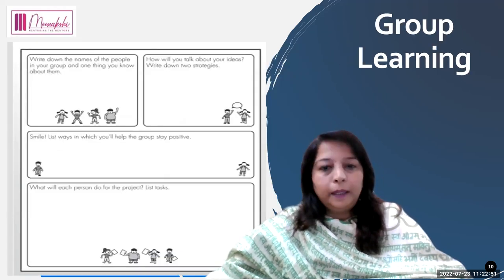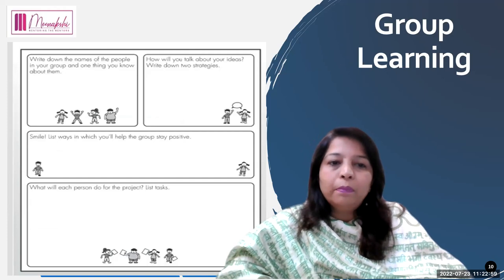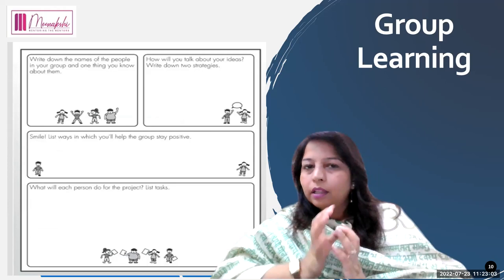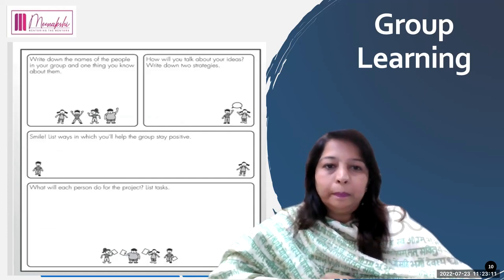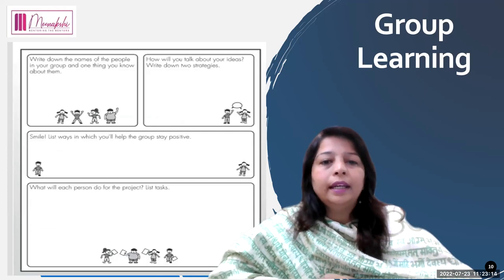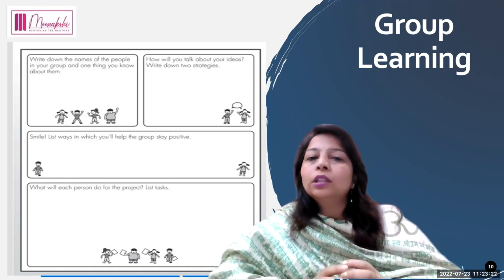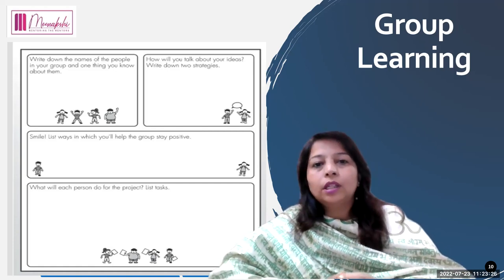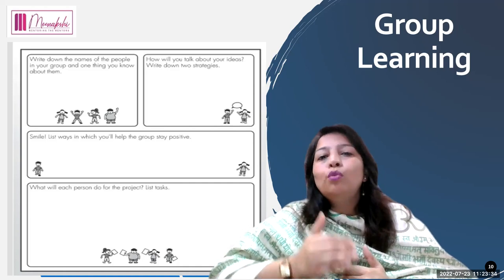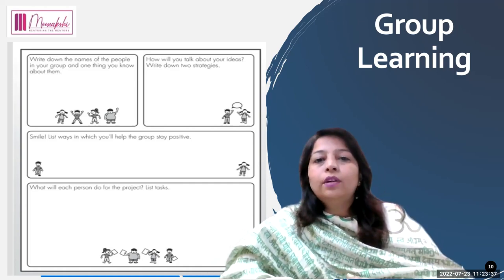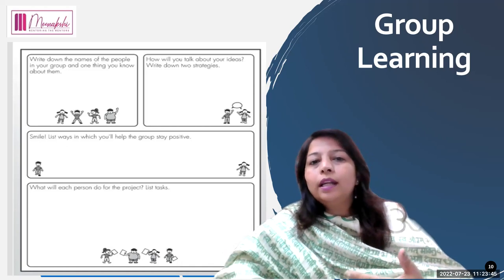Now it's about group learning. Write down the names of the people in your group and one thing you know about them — when working in a group, they should know about each other. How will you talk about your ideas? Write down two strategies. It is very difficult sometimes when students are not able to take initiative or do not volunteer to talk to each other, and then we will not be able to get successful results for collaborative learning. So students should come up with strategies for how they will initiate and process their knowledge to come to conclusions.